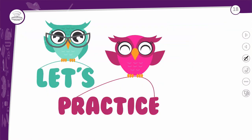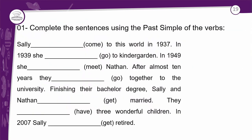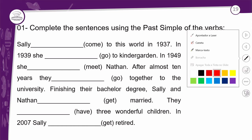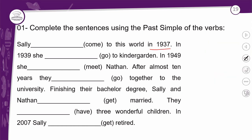Então é isso. Let's practice — vamos praticar? Temos vários verbos para colocar no passado e vamos ver se são todos irregulares. Sally — você vai usar o verbo 'come to this world in 1937'. O verbo 'come' é irregular; seu passado é 'came'. Então: 'Sally came to this world in 1937.' In 1939, she went to the kindergarten — 'go' vira 'went'; ela foi para o jardim de infância.